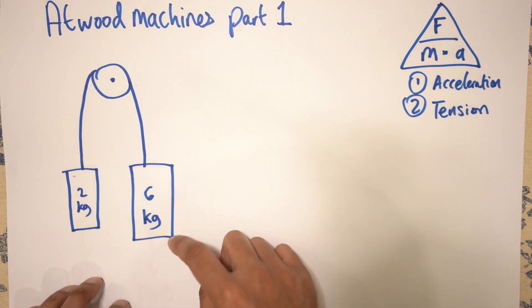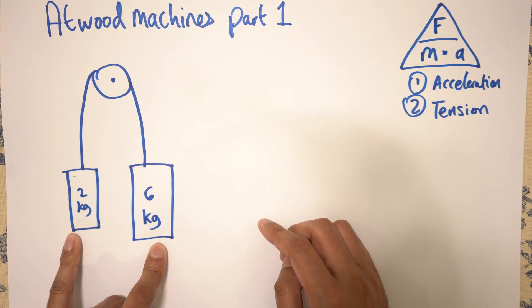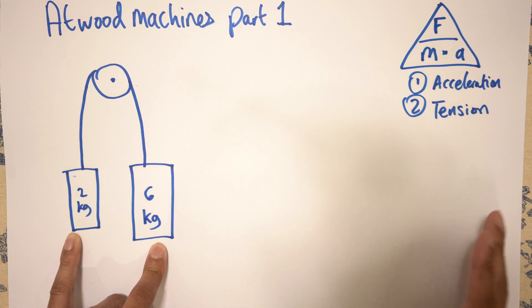Now an Atwood machine is basically a pulley system, a frictionless pulley, and you've got two masses on either end. There's various configurations, so watch out for Part 2 and Part 3 where I go over the other different types.